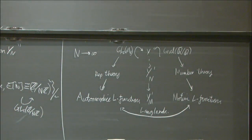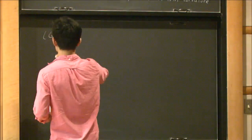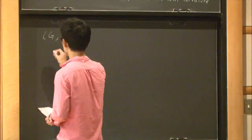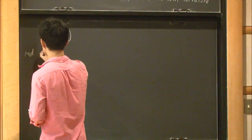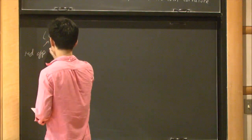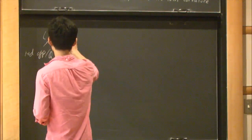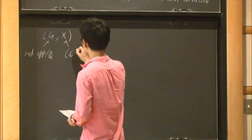Basically, you want to try and play this game with more general L functions. To do that, you have to introduce Shimura varieties. There's a formalism, which is due to Deligne, where if you have G, a reductive group over Q,